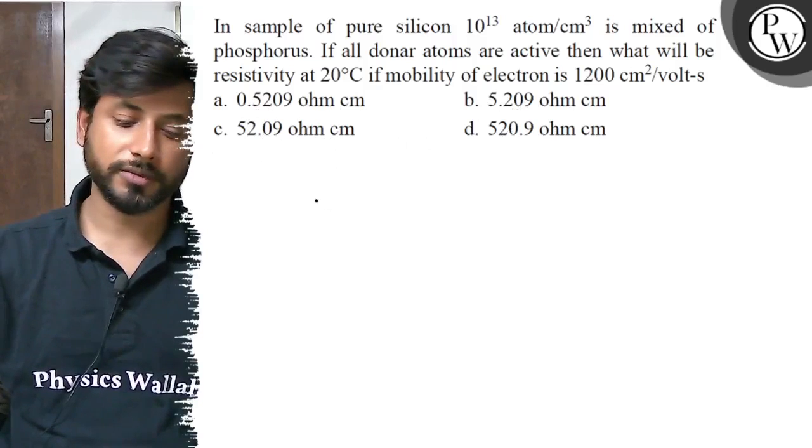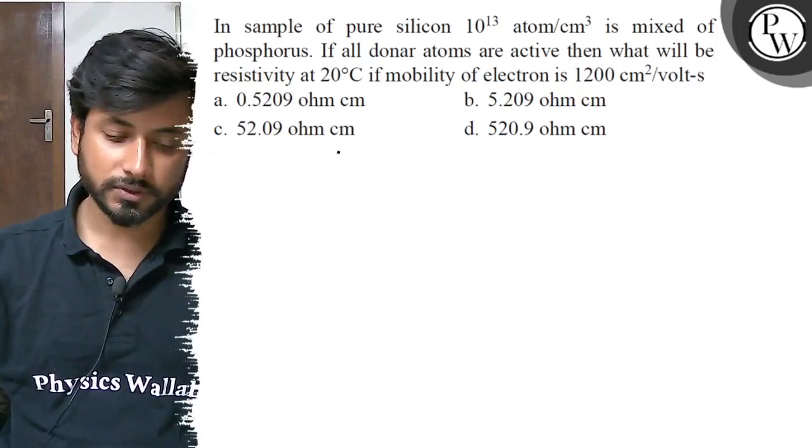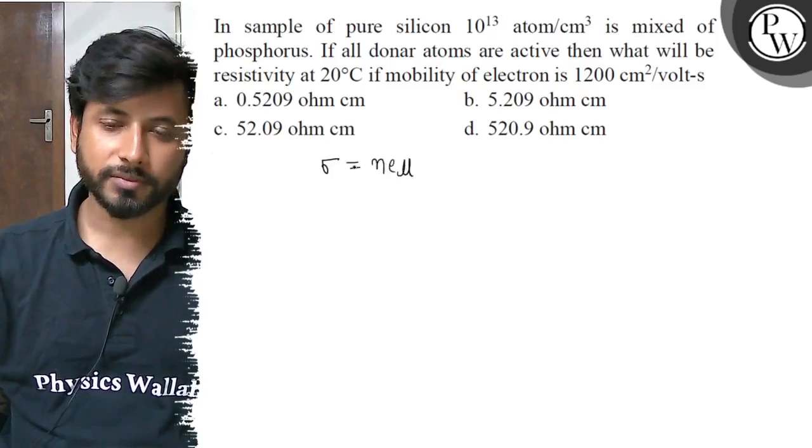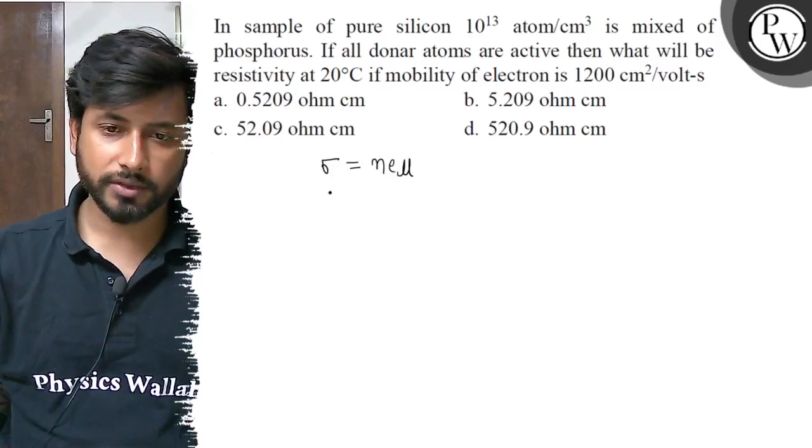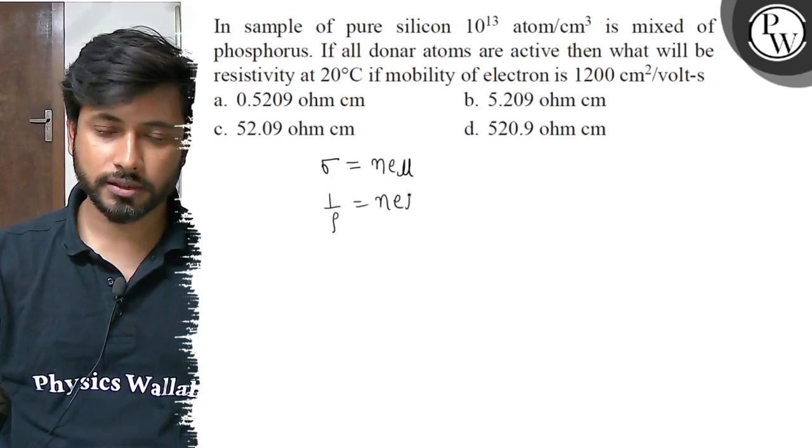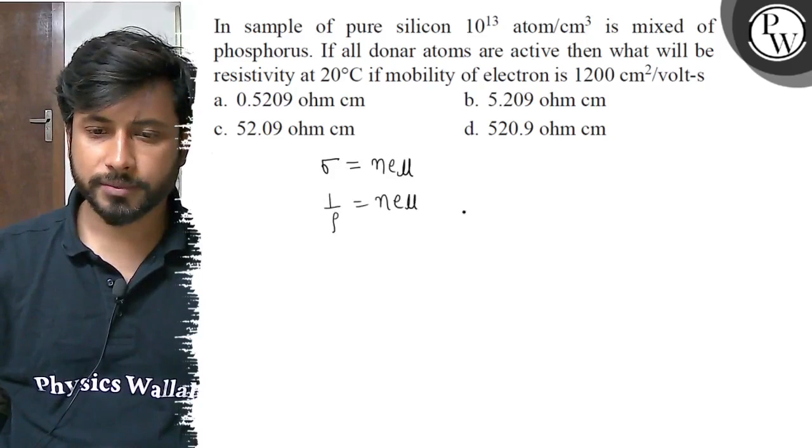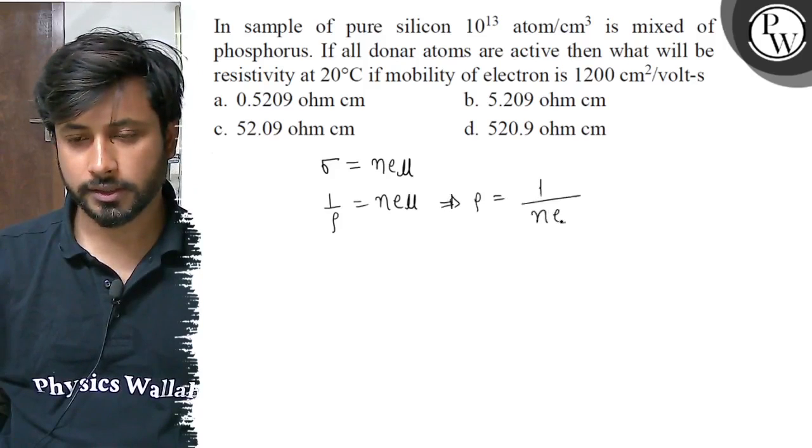For conductivity, sigma equals n e mu. For resistivity we have to calculate rho, which equals 1 by n e mu.